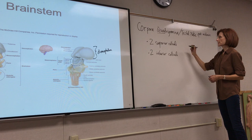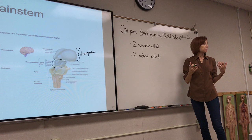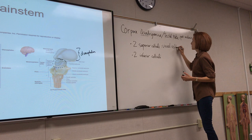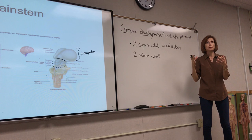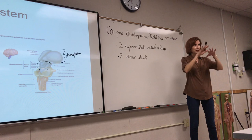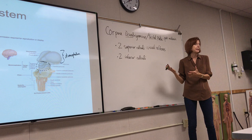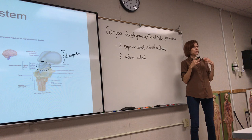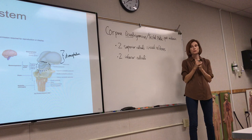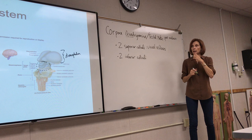The neurons in the superior colliculi are responsible for visual reflexes — giving us a quicker reaction time to something in our visual field. This is life-saving: it allows us to react quickly to something coming toward us, like when driving or playing sports when a ball is coming at your face.